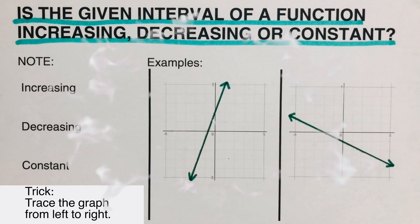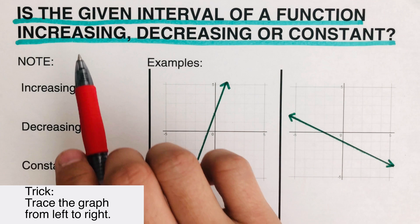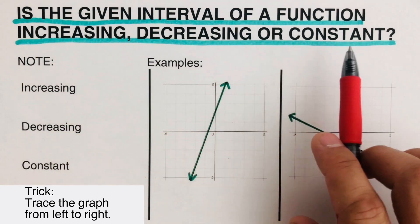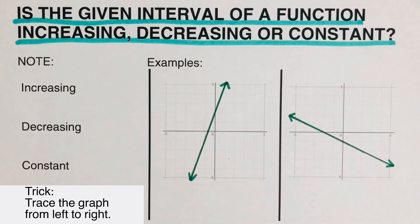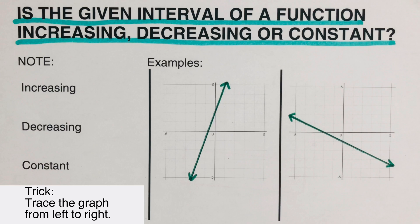In this video we're going to determine if a given interval of a function is increasing, decreasing, or constant. The ones we're referring to as increasing, decreasing, or constant are the y-values, or the output. The question is: what's happening to the output values at a given x-interval? Is the output increasing, decreasing, or constant?